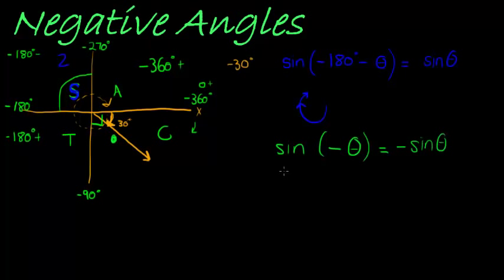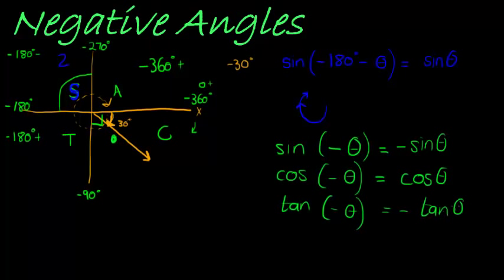How about cos? Cos of a negative angle, a negative acute angle, would be positive, because negative angles are in the fourth quadrant, and cos is positive in that quadrant. Tan is simply negative tan of theta, because only cos is positive in the fourth quadrant.